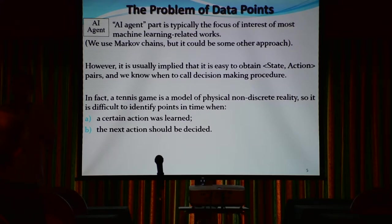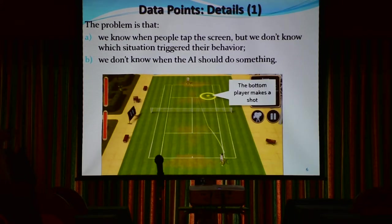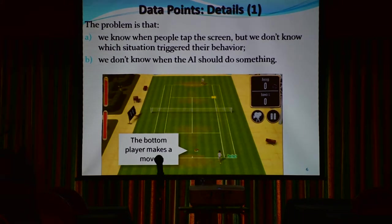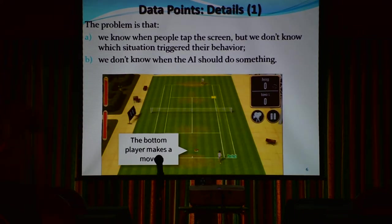In our case, I don't really know when I should learn actions and when I should act. Let me illustrate this concept. Looking at one of the game's snapshots: I know the bottom player tapped the screen, so I know they want to make an action. But what's the corresponding situation — to which situation did this player respond? I know they tapped the screen, but that's it. Another example: I know this person is trying to move to the center to occupy the strategic point on the court. But how do I know exactly which situation on the screen they were responding to? That's a real issue.